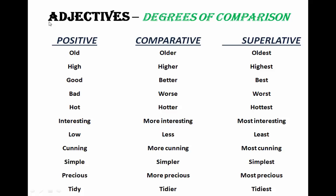Hello lovely people. Today I am going to teach you adjectives — degrees of comparison. Basically, adjectives of quality have three forms called degrees of comparison. The three forms are: positive degree, comparative degree, and superlative degree. We will have to use the degrees accordingly.